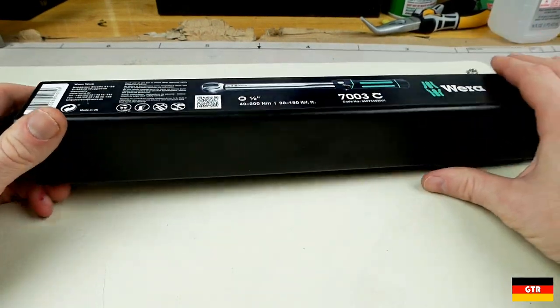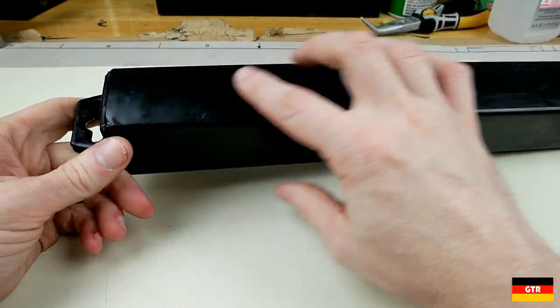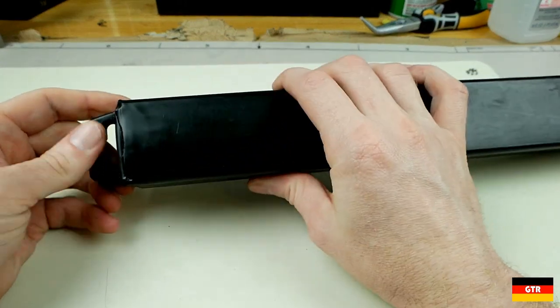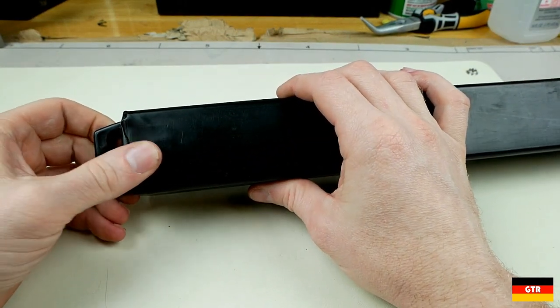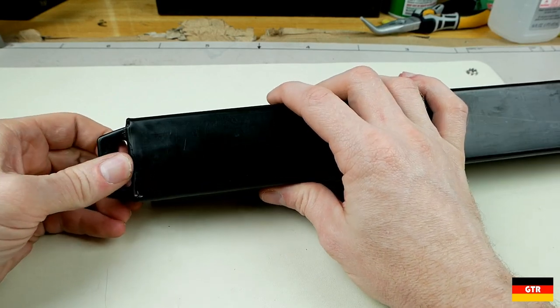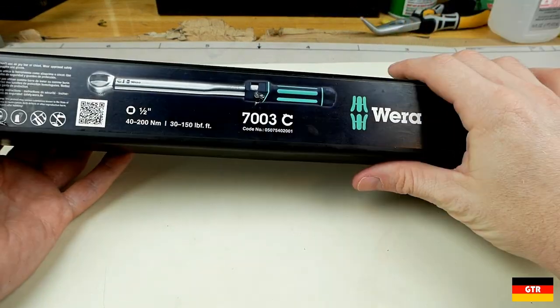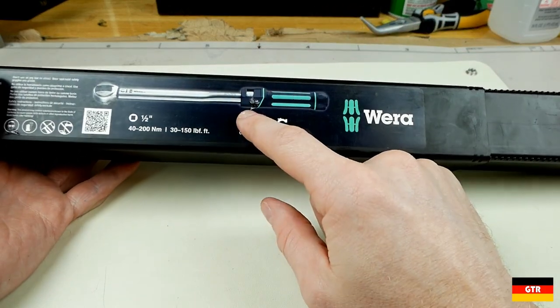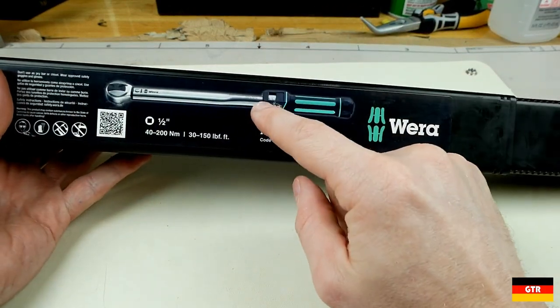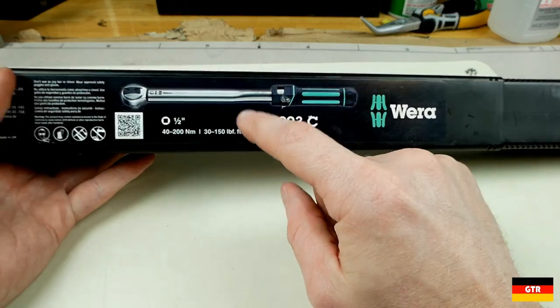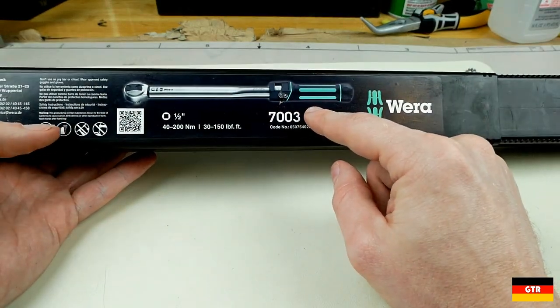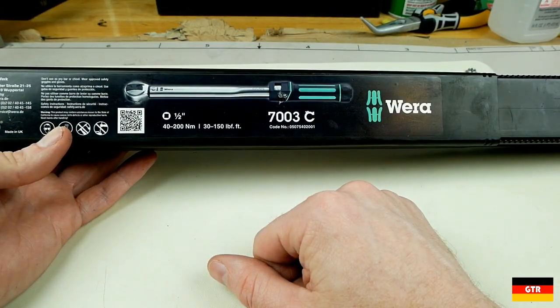So the first thing is this case. At some point I must have dropped it or hit something with it because there's a big crack in it now. I don't think this case really was ever intended to be permanent, but I couldn't find a case for sale from Norbar to fit this torque wrench. They don't sell the cases separately.